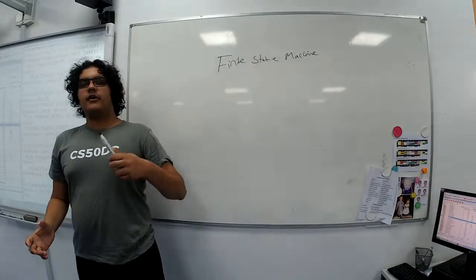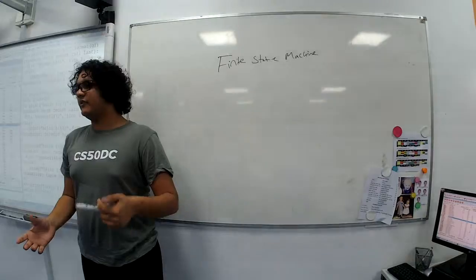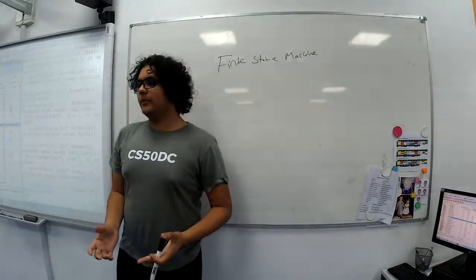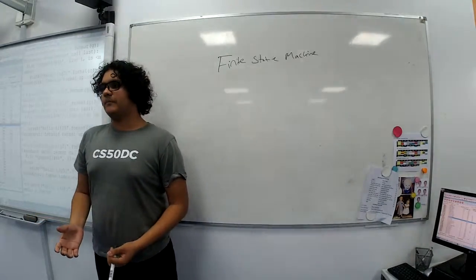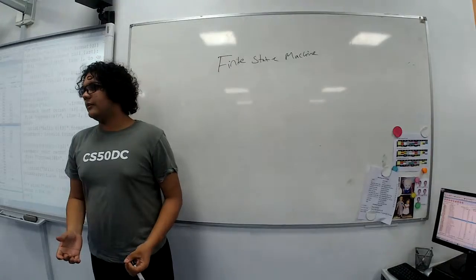It's something that we use often to demonstrate how systems work. A good example of a system that's a finite state machine is the vending machines that give water.